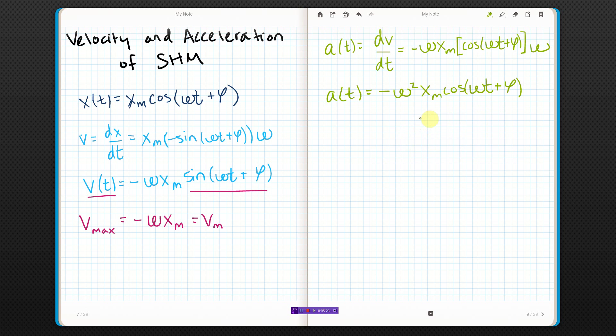And we do the same thing we did before to find the maximum. If the biggest that cosine can get is 1, so the biggest I'm going to get for A is when you have this stuff times 1. So you end up with the maximum acceleration you can have is this thing out in front. And we call that the acceleration magnitude. Alrighty.